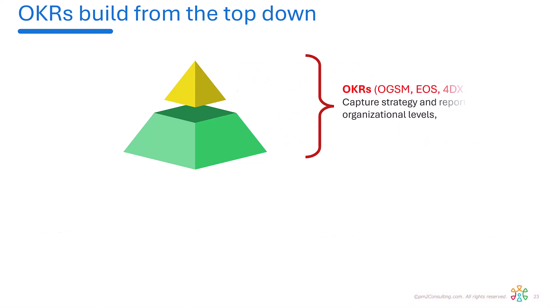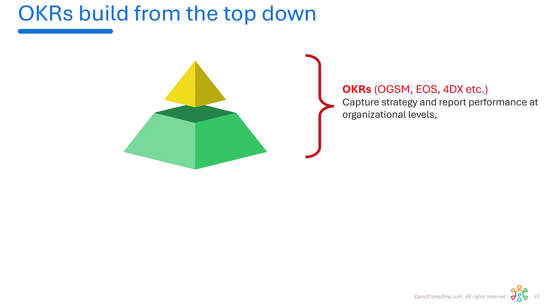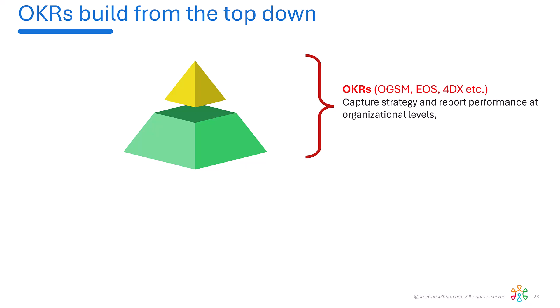Now, to measure OKRs — whether that's OGSM, EOS, Four Disciplines of Execution, Balanced Scorecard, et cetera — we're typically capturing the strategy at the organization level and reporting performance at the organizational level. The tools to do that are things like Microsoft Goals, Workboard, Quantive, Cascade, and so on.